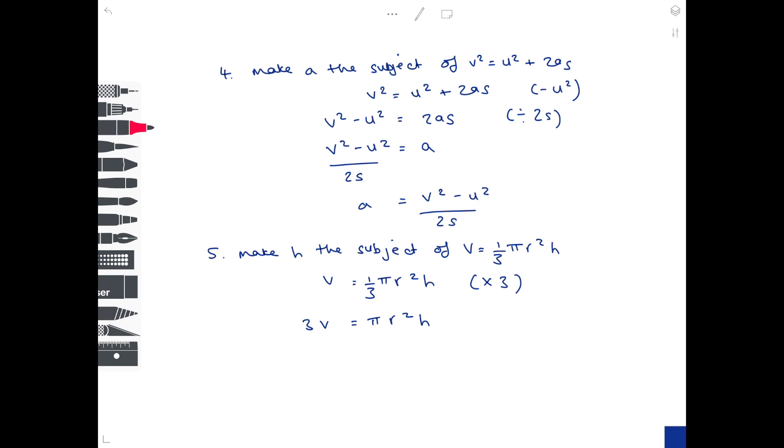Now we need to get h by itself and inconveniently it's being multiplied by pi r squared at the moment. So how do we get rid of it? By dividing by pi r squared. And that's actually your final answer. Luckily there's no square rooting needed because h was already by itself.